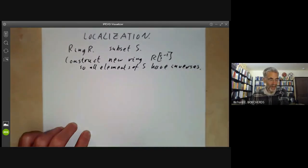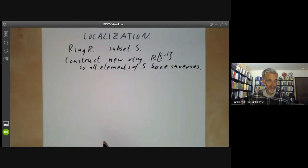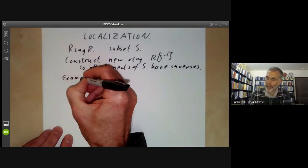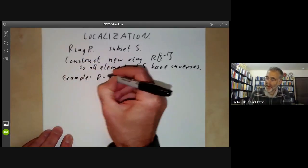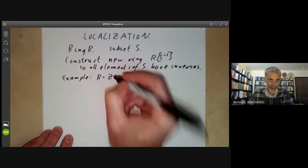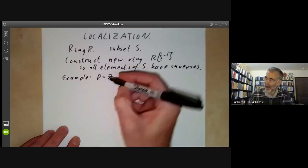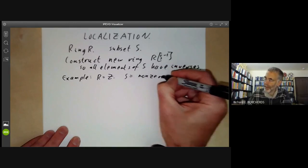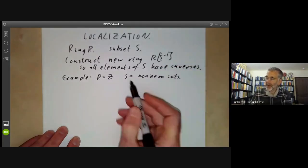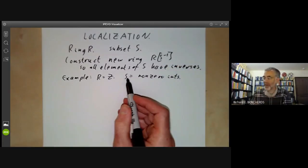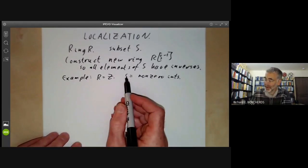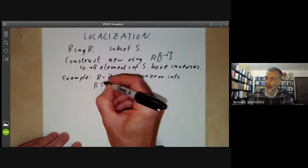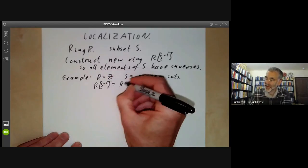Let's start by looking at some examples. Let's take R to be the ring of integers, and let's take S to be the non-zero integers. So what we do is take the integers and force all non-zero integers to have inverses. RS⁻¹ is just the rationals, Q.